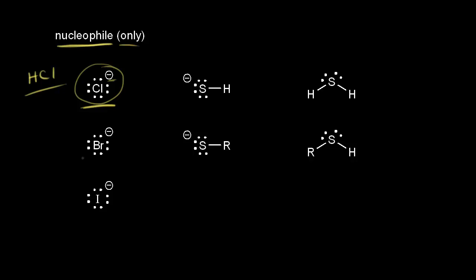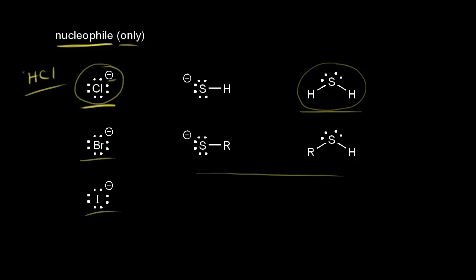The same idea applies to the bromide anion and the iodide anion. We also have our sulfur nucleophiles — hydrogen sulfide is a strong nucleophile because of the polarizability of sulfur, but these are also only going to function as a nucleophile in our reactions. That's because the conjugate acids are fairly acidic, for the same reason we talked about with chloride.